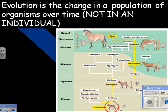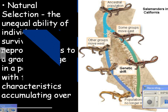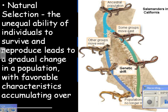Here's the original horse — horses are pretty well documented in the fossils. Here's the present-day horse with a hoof. This is actually one toe that became a hoof. You can see it changed over time — here are the three toes in earlier ancestors. They changed over time and eventually got a hoof. Natural selection is the unequal ability of individuals to survive and reproduce, which leads to a gradual change in a population with favorable characteristics accumulating over generations.